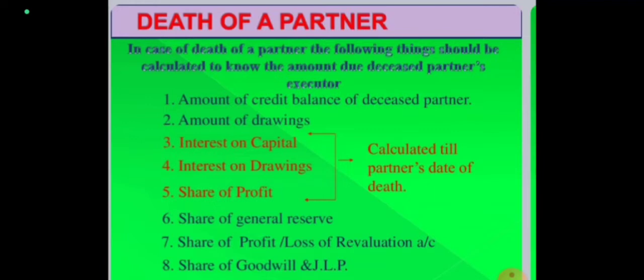The sixth point is the share of general reserve: if any general reserve is appearing in the books of account of the firm, it is to be calculated on the basis of the profit sharing ratio and given to the executor. Seventh, the share of profit or loss on the revaluation account: in the event of death of a partner, we have to prepare the revaluation account, and whatever the outcome — either a gain or a loss — it is to be given to the deceased partner.